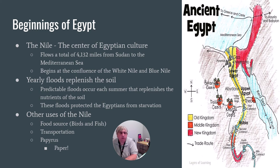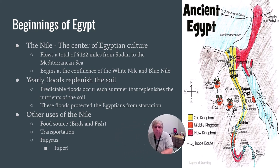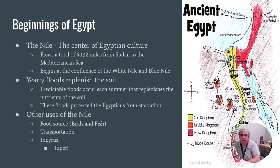The Nile River is also going to be used as a transportation source, a food source, and it's even going to be used for papyrus, which is basically paper.